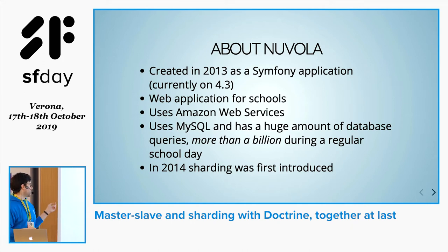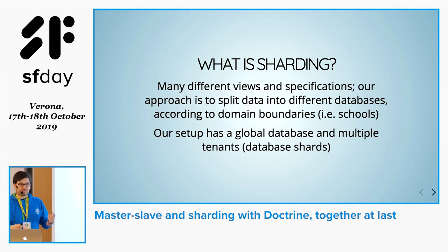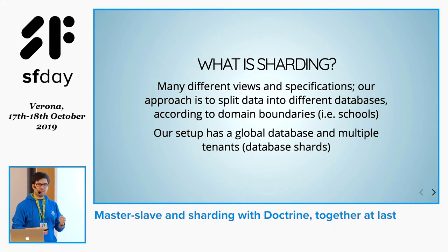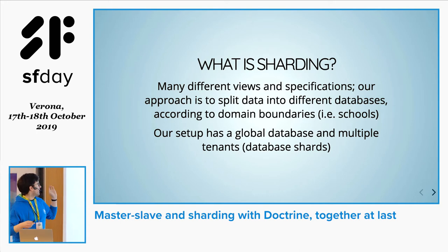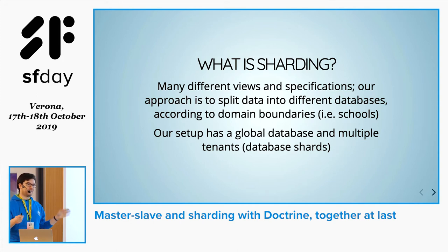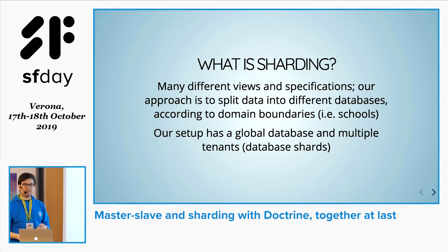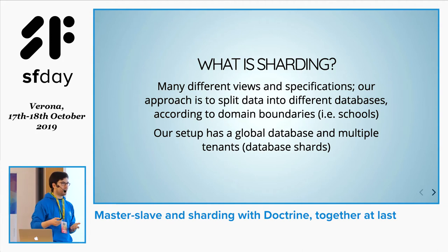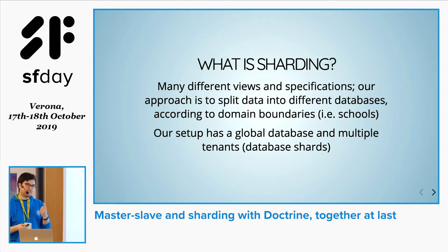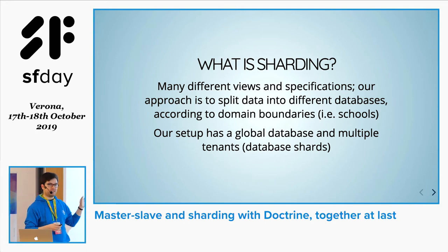The first optimization was sharding, which was introduced in 2014. What do we mean with sharding? If you Google the term, you'll find a lot of definitions. Basically, it's splitting your data into different databases according to the main boundaries. For our application, that would be the school, i.e. the customer. Our setup has one global database and multiple tenants, which would be the database shards.